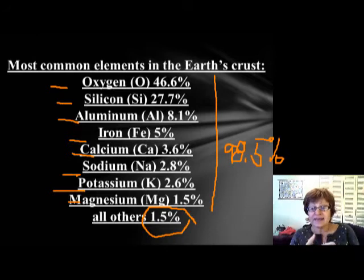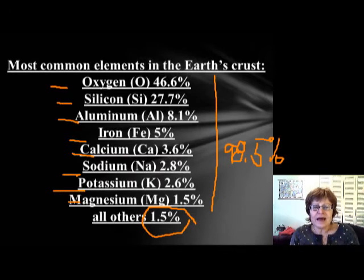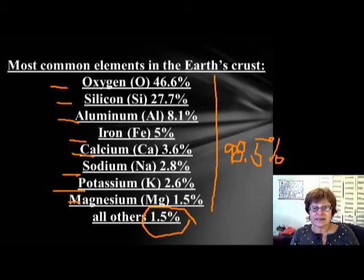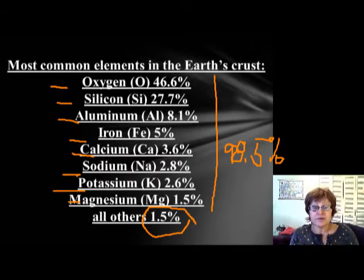That 1.5 percent is where you have your titanium, your gold, your copper — I can come up with a lot of things in that 1.5 percent. That's why, when you mine for something like gold, you have to think about how much gold a rock has to contain to make a prosperous gold mine.